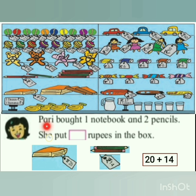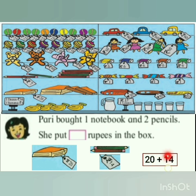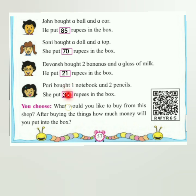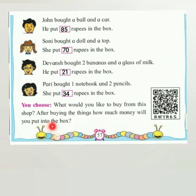Then last is Pari. Pari bought 1 notebook and 2 pencils. One notebook costs 20 rupees. She bought 2 pencils — 1 pencil costs 7 rupees, so 2 into 7 is 14. Let's add: 20 plus 10 is 30, 30 plus 4 is 34. She put 34 rupees in the box. Now it's your turn children — you can buy 1 or 2 items or as many as you wish. After that, calculate the amount and write it down in your rough notebook.